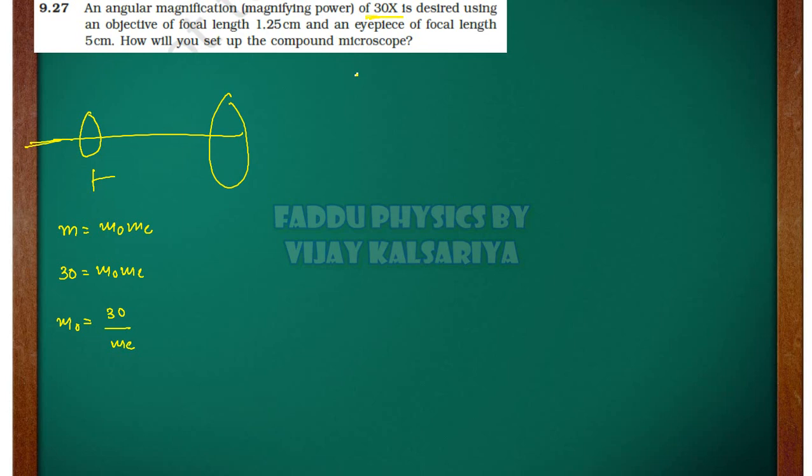Angular magnification of eyepiece lens is 1 plus d by fe, which equals 1 plus 25 by 5 equals 6. Values put here: 30 divided by 6 equals 5. Objective lens magnification is 5.